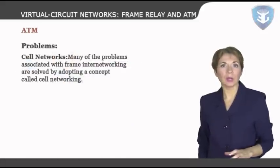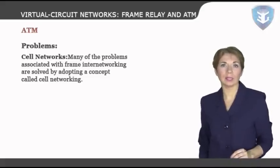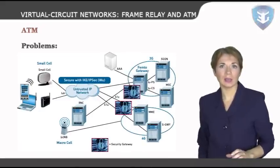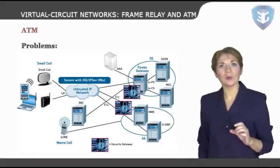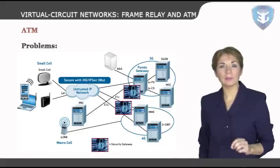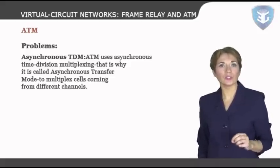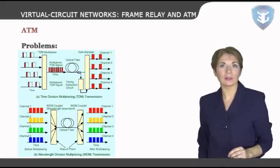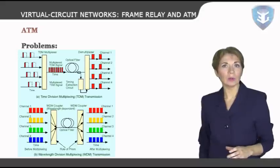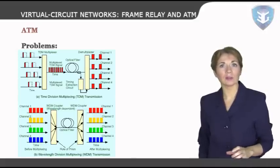Cell networks: many problems associated with frame inter-networking are solved by adopting a concept called cell networking. A cell is a small data unit of fixed size. In a cell network, which uses the cell as the basic unit of data exchange, all data are loaded into identical cells that can be transmitted with complete predictability and uniformity. Asynchronous TDM: ATM uses asynchronous time division multiplexing to multiplex cells coming from different channels. It uses fixed size slots — the size of a cell. ATM multiplexers fill a slot with a cell from any input channel that has a cell; the slot is empty if none of the channels has a cell to send.